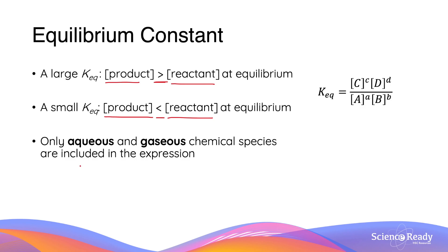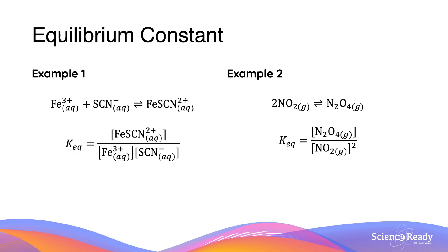When calculating the equilibrium constant, we only use compounds in aqueous and gaseous states — we'll discuss why in future videos. Here are two examples of reversible reactions examined in previous videos. In the equilibrium constant expression, the numerator contains the concentration of the product, which is the iron-thiocyanate complex.